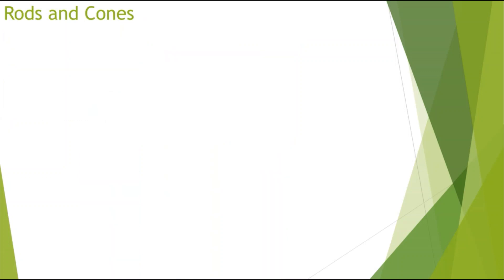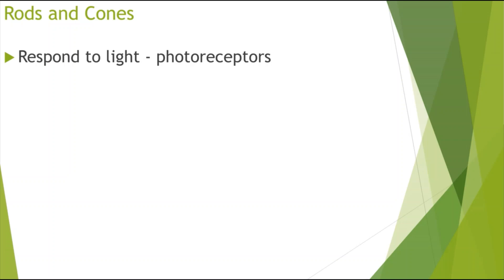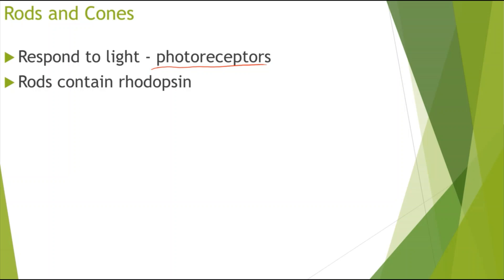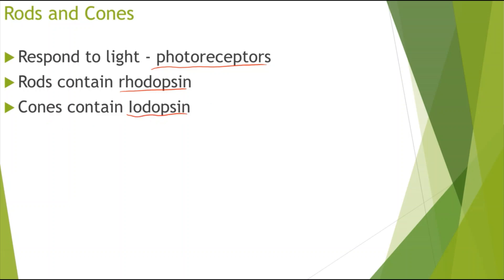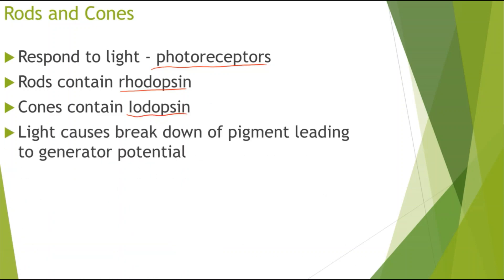Now looking at rod and cone cells. These cells respond to light, so we call them photoreceptors. Rod cells contain a pigment called rhodopsin, and cone cells contain a pigment called iodopsin. When light hits these pigments, it causes the breakdown of these pigments, leading to a generator potential as we looked at before.